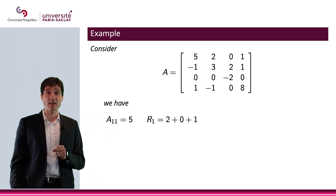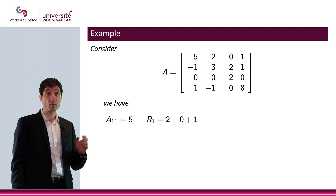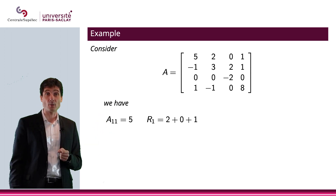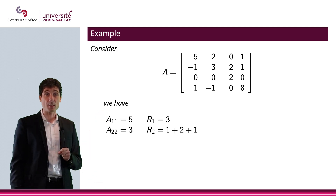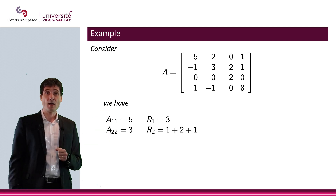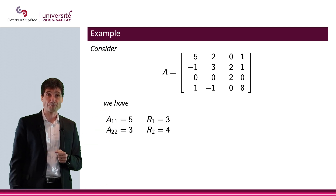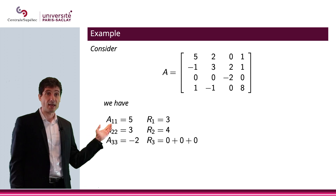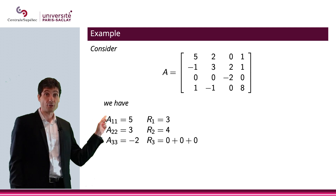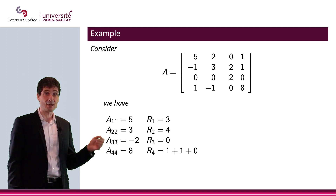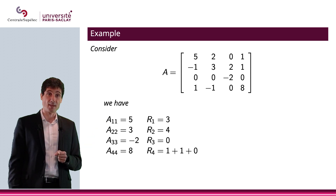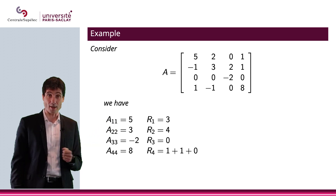For the first row: A_11 = 5, and R_1 = 2 + 0 + 1 = 3. Moving to the second row: A_22 = 3, and R_2 = |−1| + 2 + 1 = 4. For the third row: A_33 = −2, and all other terms are zero, so R_3 = 0. Finally, the fourth row: A_44 = 8, and R_4 = 1 + 1 = 2.